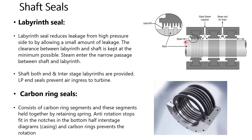Shaft seals are provided on both ends of the bearing as well as between each and every stage. The labyrinth seal reduces leakage from the high pressure side and allows only a very small leakage. In a labyrinth seal there are projection sections both on the casing housing of the turbine and on the rotor. On the high pressure side it prevents steam from going out of the casing, whereas on the low pressure side in a condensing turbine it does not allow air to enter the turbine.